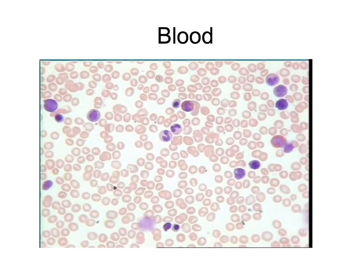Blood is classified as a connective tissue. This is due to the fact that it has a large amount of non-living matrix — in this case the blood plasma — and then a few cells scattered about, being the blood cells. The blood cells we will be looking at will be the red blood cells, the white blood cells, and the platelets.